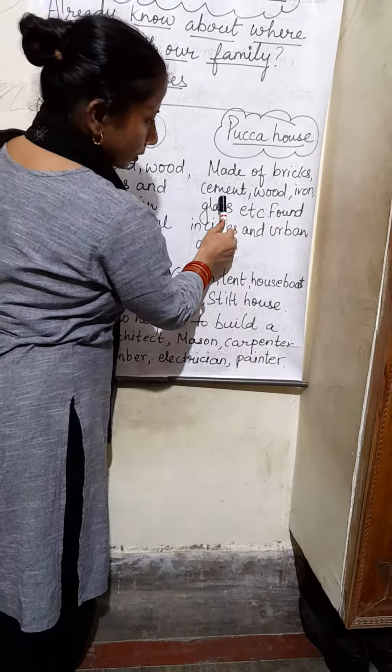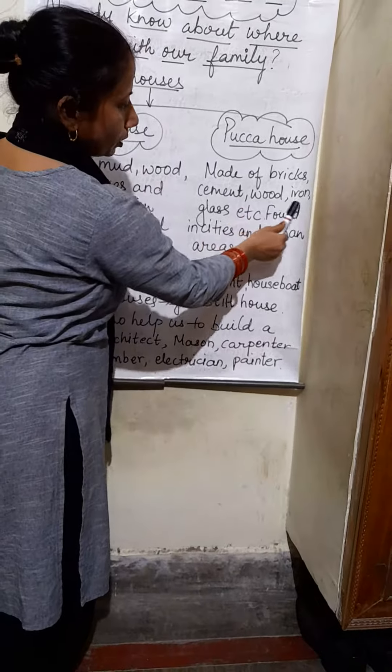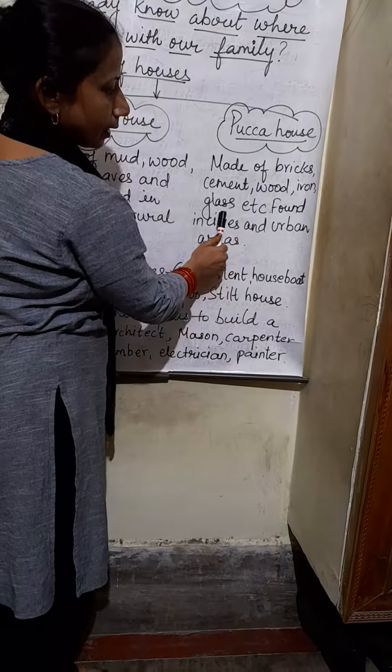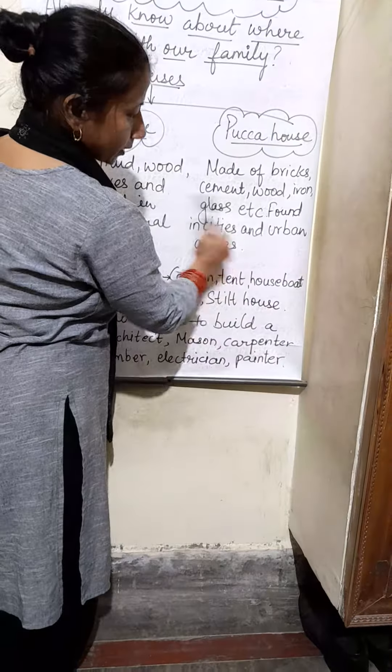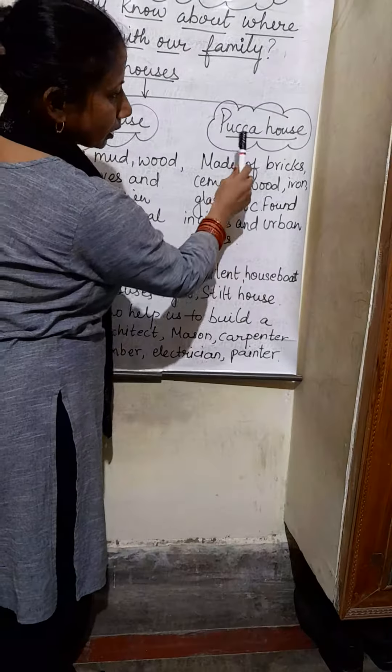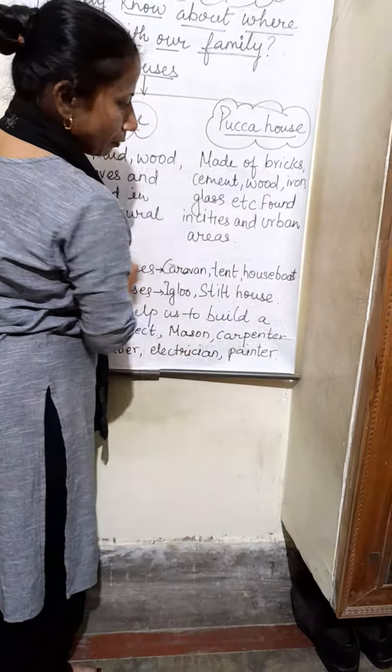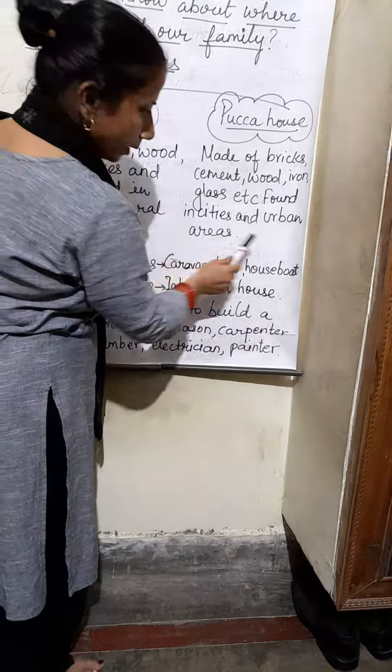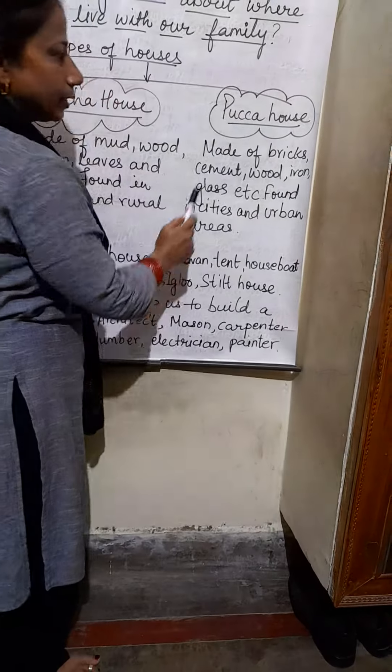The next type is the Pucca House, which is made up of bricks, cement, wood, iron, glass, and so on. These types of houses are found in cities and urban areas.